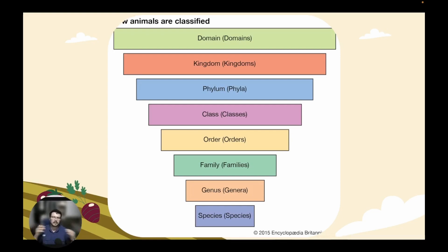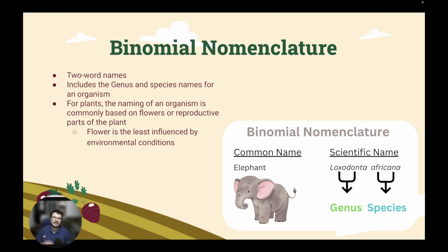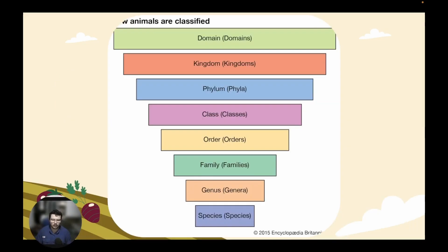This is the Linnaean classification system. It's been around for a couple hundred years now and it's still what all scientists everywhere in the world use. As far as how we name plants, we use what's called binomial nomenclature. Bi means two — like a bicycle has two wheels — and nomenclature refers to a naming convention. So we use two-worded names to name organisms scientifically in Latin. This binomial nomenclature includes the genus and the species — the bottom two levels.